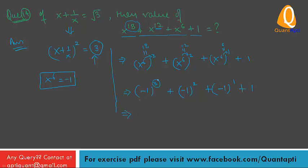Evaluating: minus 1 raised to power 3 — 3 is odd — gives minus 1. Plus minus 1 raised to power 2 — 2 is even — gives plus 1. Minus 1 raised to power 1 — 1 is odd — gives minus 1. Plus 1. So we have minus 1 plus 1 minus 1 plus 1, and these all cancel out. The answer is 0. This is how you solve this type of question using the short trick.